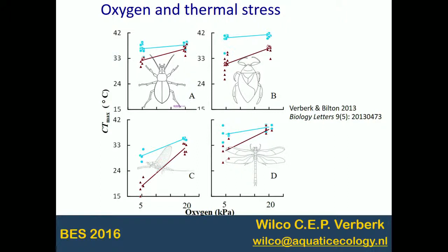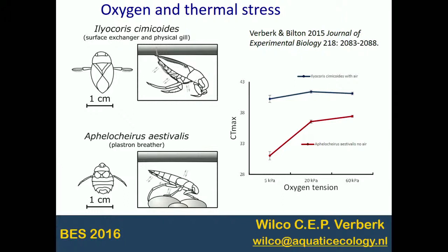To explain in more detail, I'll focus on the hemipterans — two species used. One is a standing-water species with a bimodal breathing strategy: it has a physical gill but can also take up oxygen from the surface. The other is a plastron breeder. The plastron breeder showed a strong oxygen-limited thermal tolerance — with increasing oxygen, thermal tolerance increased; with decreasing oxygen, it decreased a lot. By negating the possibility for the surface exchanger to reach the surface and constraining it to rely solely on its physical gill, we could induce oxygen-limited thermal tolerance.